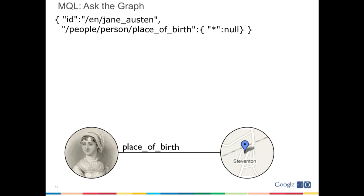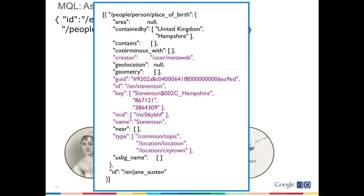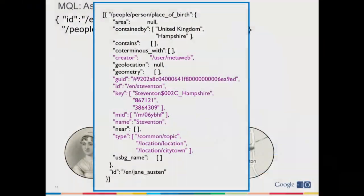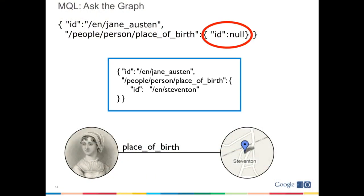Being more sophisticated, we can ask a wildcard — the star — which is going to return the same information as the last query plus more, based on the type of object we should be seeing at the other end of that link. Here it knows that place_of_birth has a location at the other end, so it gives us things like the containment hierarchy — the fact that it's contained by the United Kingdom, contained by Hampshire. We can also ask for a very specific property, like just the ID of the object at the other end, and here we get back /en/steventon.